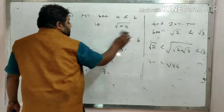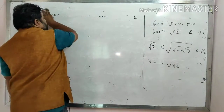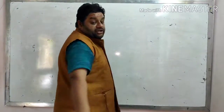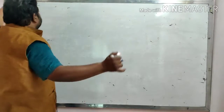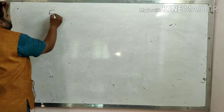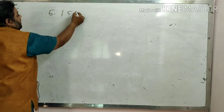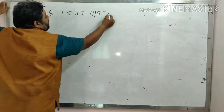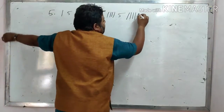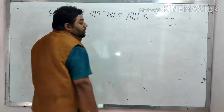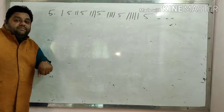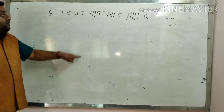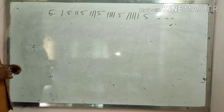Now let us move to the next concept of irrational numbers. What is the decimal expansion type of an irrational number? It is non-terminating and non-recurring. For example, consider a number like 5.1, 5.11, 5.111, 5.1111, 5.11111 — and so on with increasing ones.